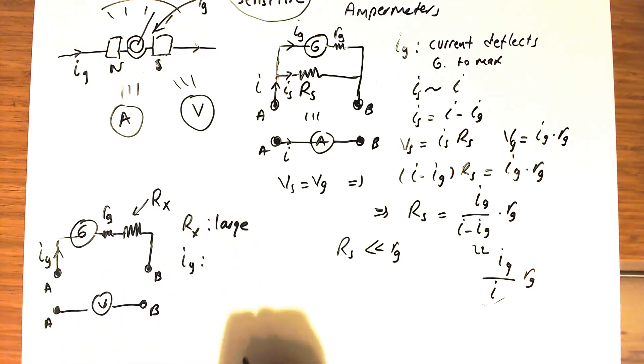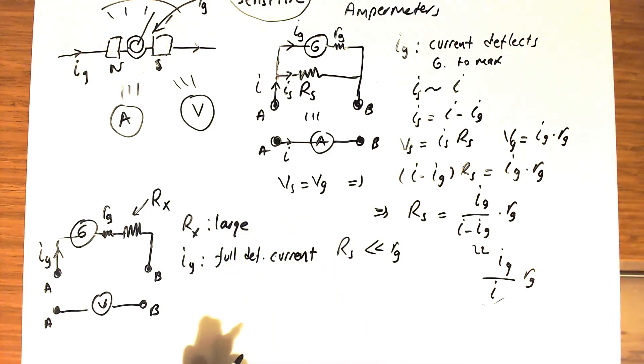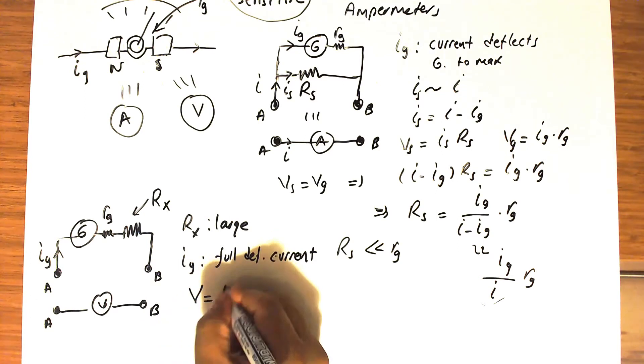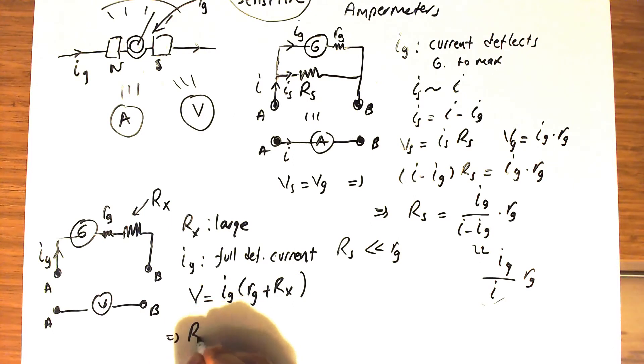Again, IG is the full deflection current. We can express the potential between terminals A and B as V = IG(Rg + Rx). From this, the auxiliary resistance Rx is determined by the equation Rx = (V - IG·Rg)/IG.